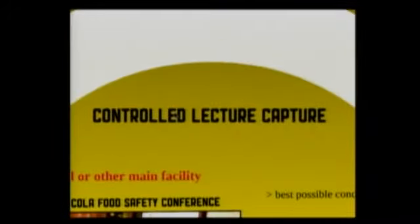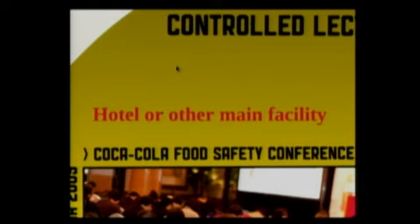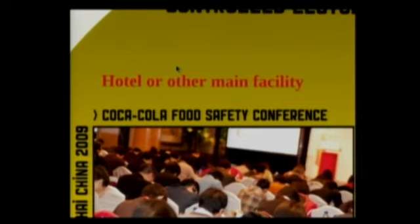A controlled lecture is the nicest to work with because it's usually a nice hotel or main facility — typically a very stable environment. This is a screenshot of a conference center in Shanghai, a perfect example of a controlled environment. Very stable location with controlled lighting, controlled audio, and reliable power, which becomes a big issue. We still have challenges even in a controlled setting because we don't have massive facilities — we have to deal with the equipment we bring with us.